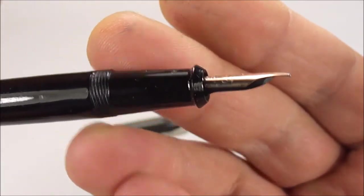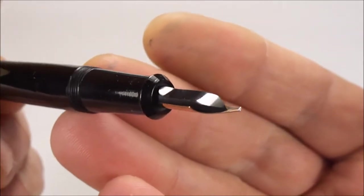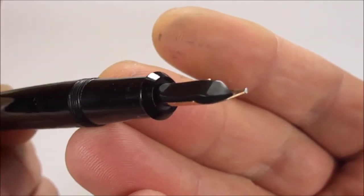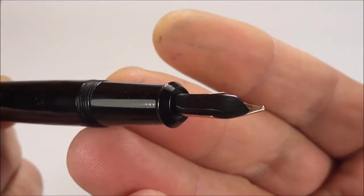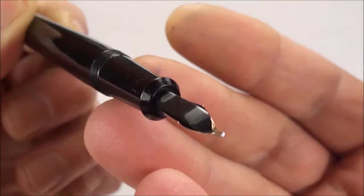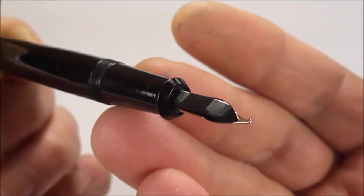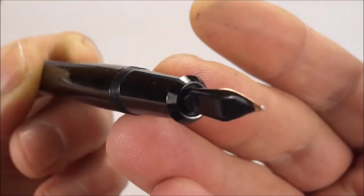There's a sideways view for you. And let's show you the feed. Underneath there, very recognisable, sort of quite a plain Onoto feed underneath the pen.